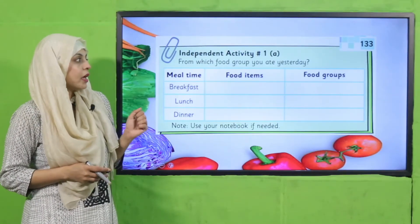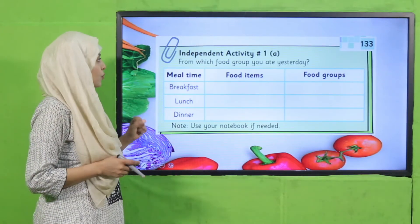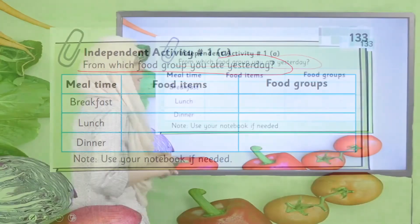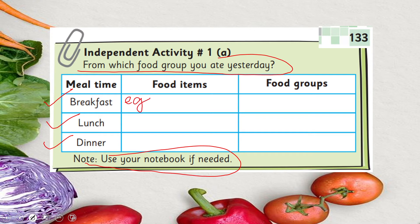Now it's time for an independent activity given on page number 133: from which food group did you eat yesterday? You must add everything — first breakfast, then lunch and dinner. For example, for breakfast I took egg and bread. Bread belongs to grains.